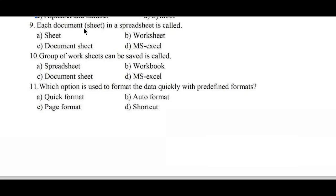Question number 9: Each document or sheet in a spreadsheet is called — Option A: sheet, B: worksheet, C: document sheet, D: MS Excel. Option B, worksheet, is the right answer. Question number 10: A group of worksheets saved together is called — Option A: spreadsheet, B: workbook, C: document sheet, D: MS Excel. Option B, workbook, is the right answer, because a collection of worksheets together is called a workbook.